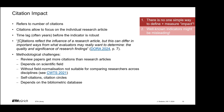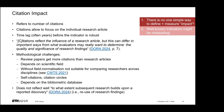Review papers might be more cited than research articles. Citation impact also depends on the scientific field, and without field normalization it's not really suitable for comparing researchers across disciplines. There might also be problems of self-citations being included, or citation circles within a community of researchers, and results depend on the bibliometric database used. Citation impact also does not reflect well to what extent subsequent research builds upon a reported discovery — it does not really capture the reuse of research findings. The key takeaway is that comparison across fields definitely requires normalization; otherwise citation impact indicators can be very problematic.